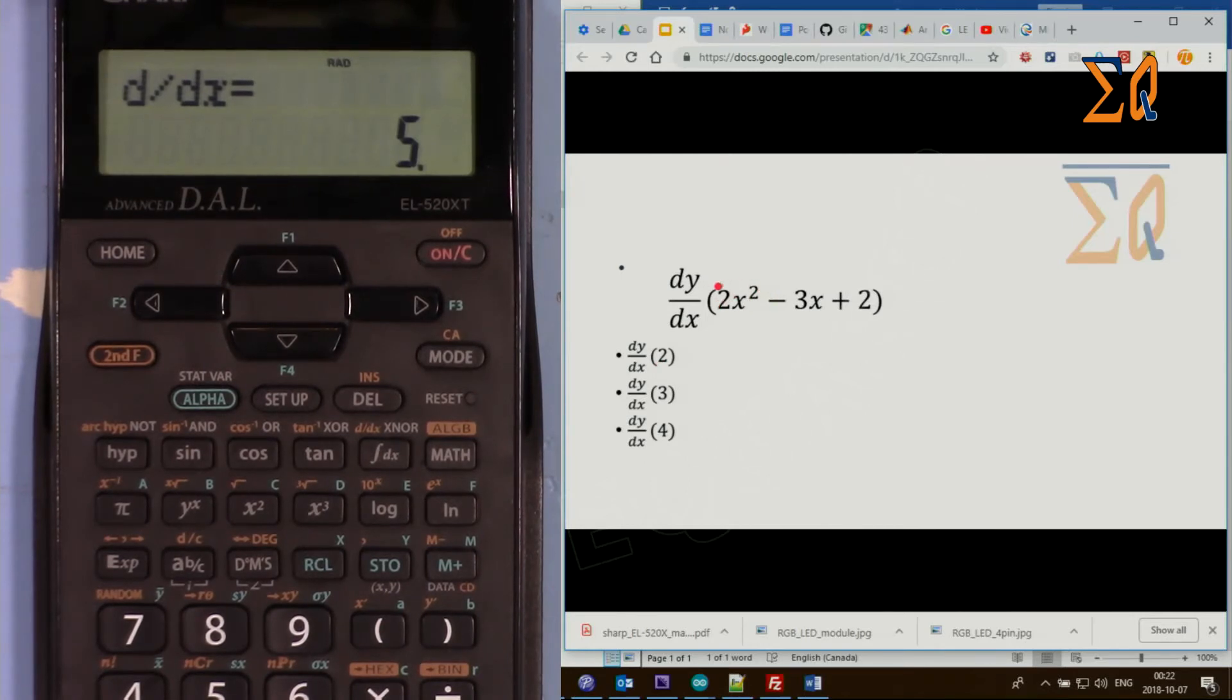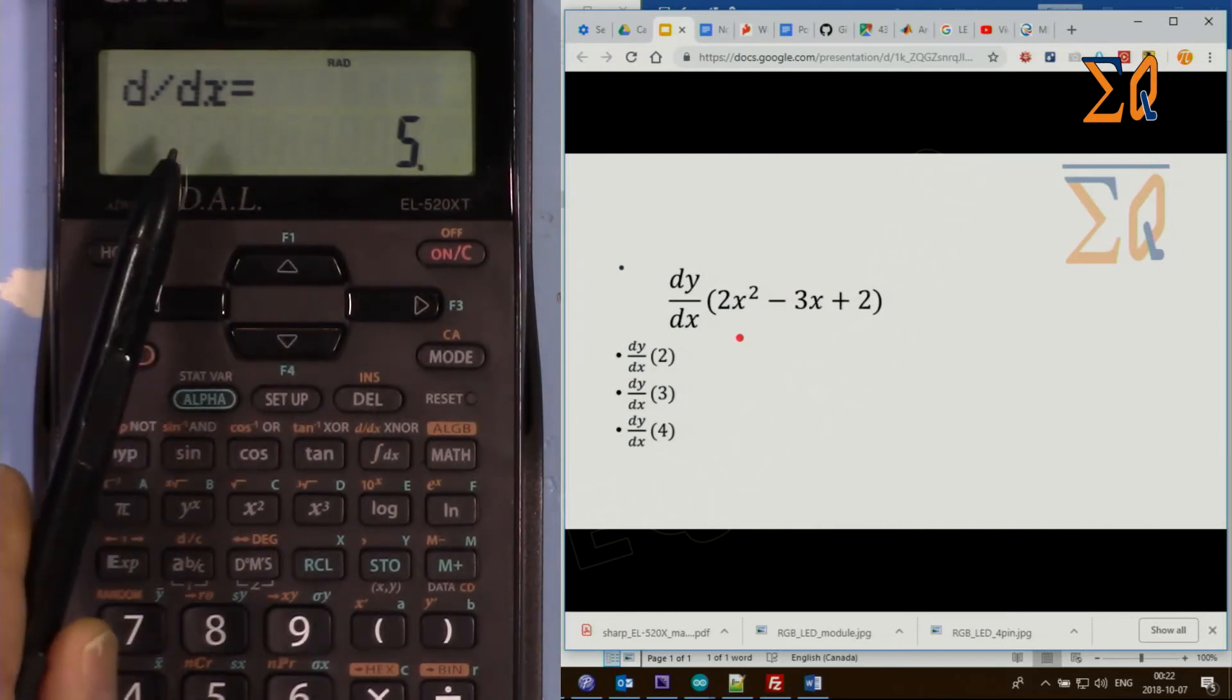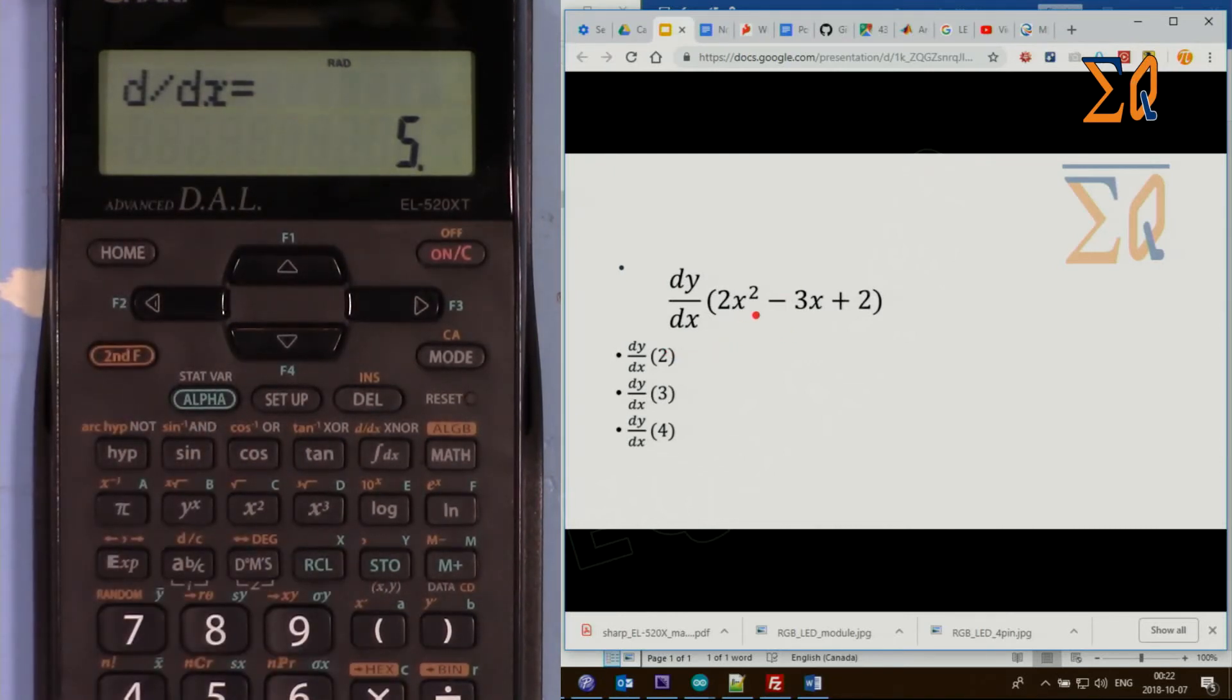Now if you do your own calculation with the derivative: 2 times 2 is 4x, and then minus 3. Now if we evaluate at 2: 4 times 2 is 8, minus 3 is 5.